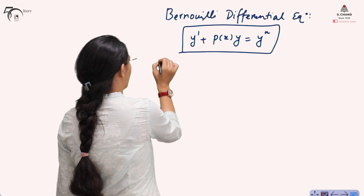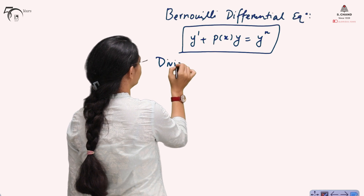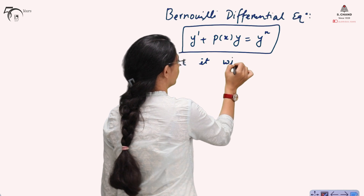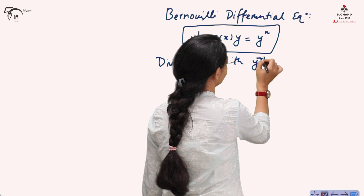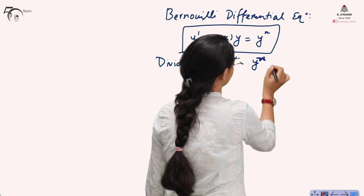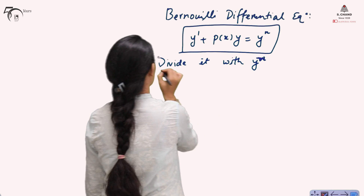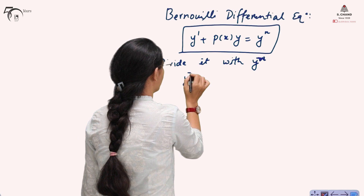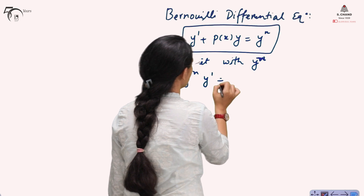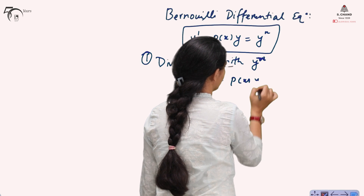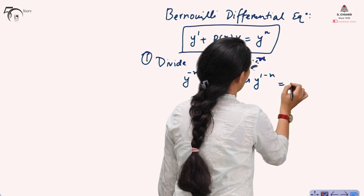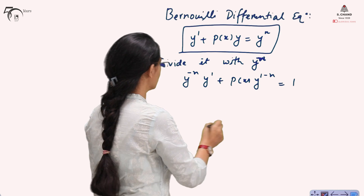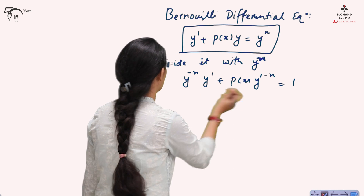To solve a Bernoulli Differential Equation, for the solution we will divide this differential equation by y^n — this will be step number 1. After dividing, we get: y^(-n) y' + p(x) y^(1-n) = 1.